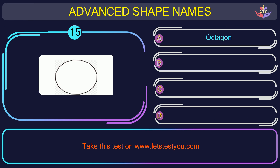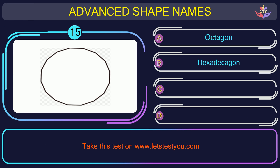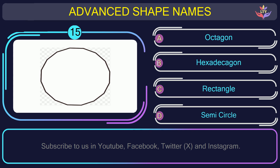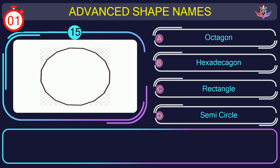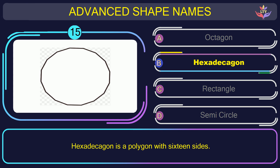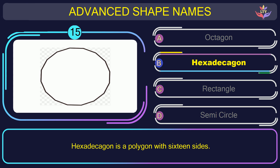Question number fifteen. What is the name of the shape in this picture? The correct answer is option C. Hendecagon is a polygon with sixteen sides.